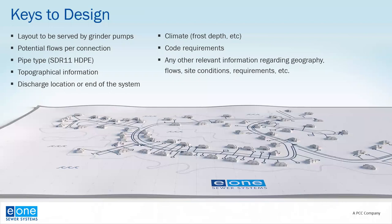Gathering project details is critical to an accurate design. The key inputs are: a layout of the area to be served showing individual lots or properties, including a graphic scale so we can accurately measure pumping distance; a general estimate of sewage flow per property, based on actual data or standards for a particular area; the pipe type — generally SDR 11 HDPE is accepted; topographical information so we know if there are any hills; and a discharge location. Finally, it's useful to understand region-specific information such as climate, code regulations, and any potential for surrounding future development, which could be taken into account in provisions to allow future connections into the same pipe network.